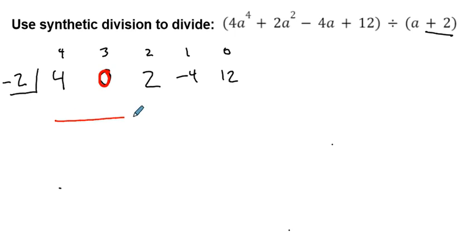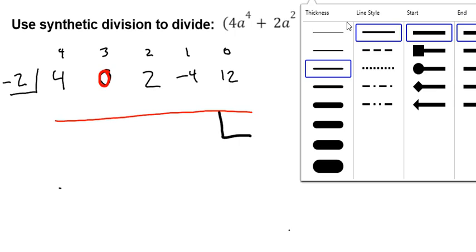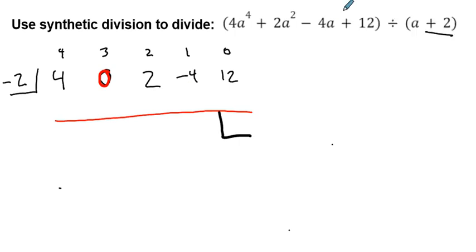We're going to put our line here, switch back to black ink, put a box, and now we will go ahead and use our normal process. We're going to pull this 4 down, then multiply and add, multiply and add. We're going to do it one extra time because we've got an extra term here.